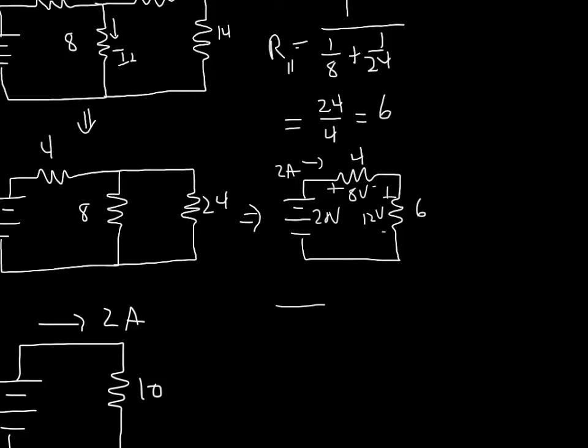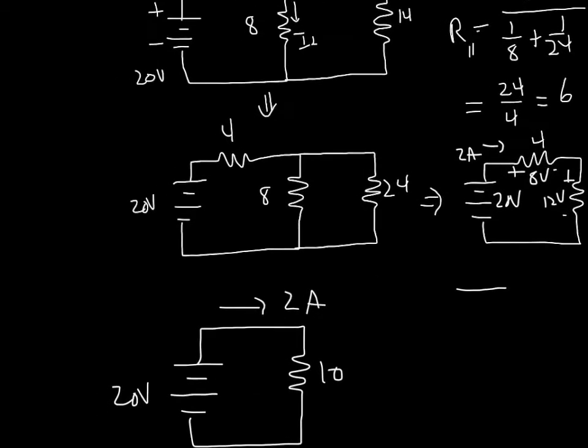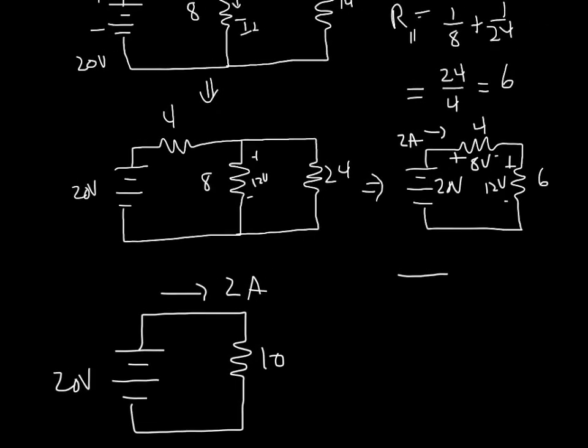Now I've learned that the current in the main branch is 2 amps, and the voltage across that parallel combination is 12 volts. That means I can replace this with 12 volts. I know there's a 12 volt drop across this parallel combination, the 6 ohm parallel combination. So that means there's also a 12 volt drop across the 8 and the 24 in the previous picture. So this is 12 volts.